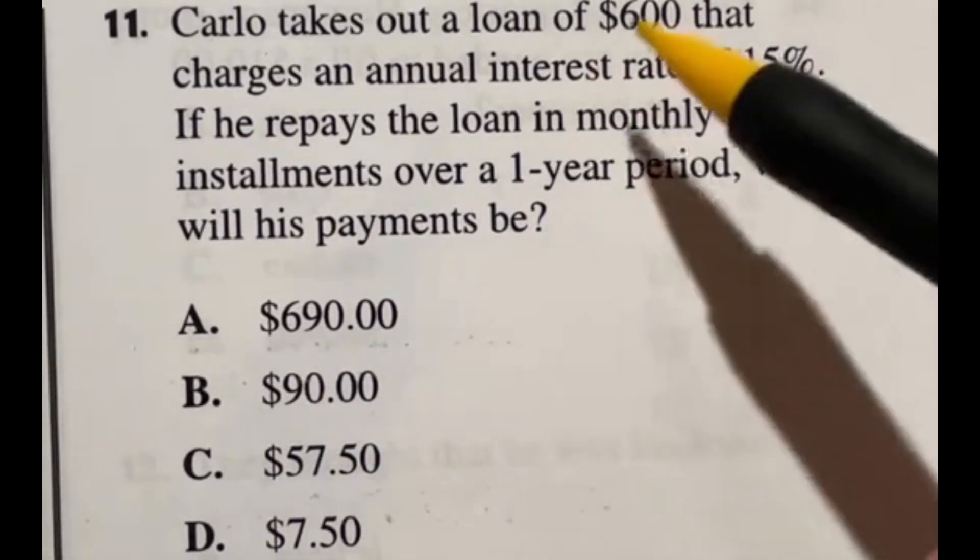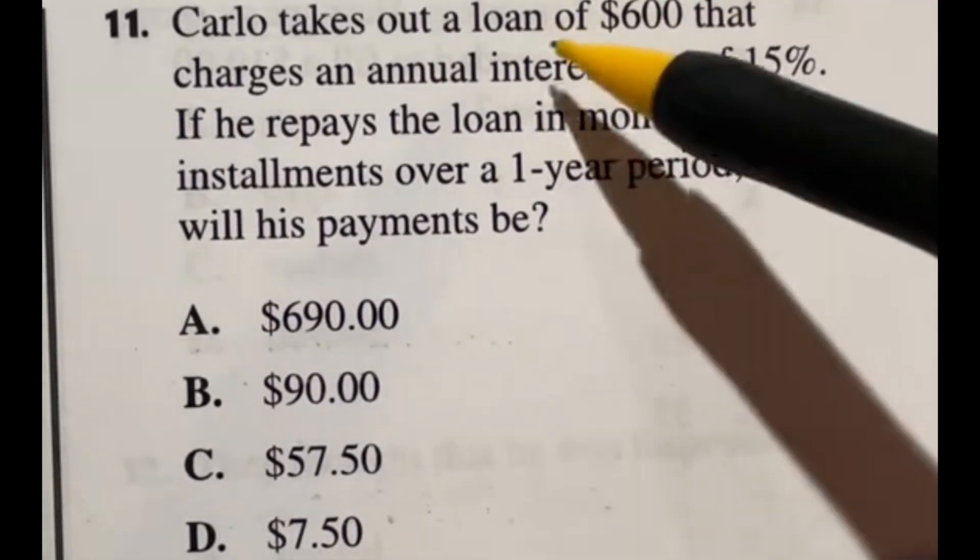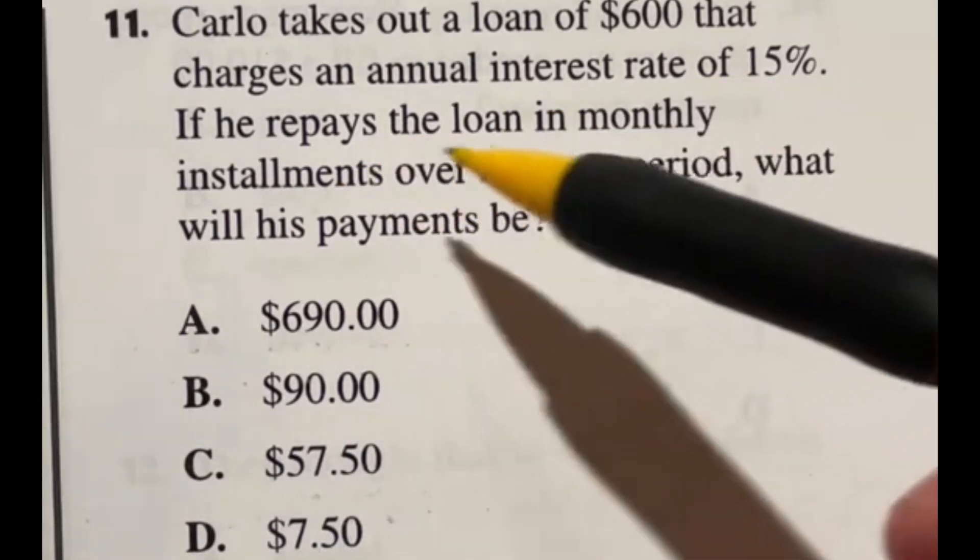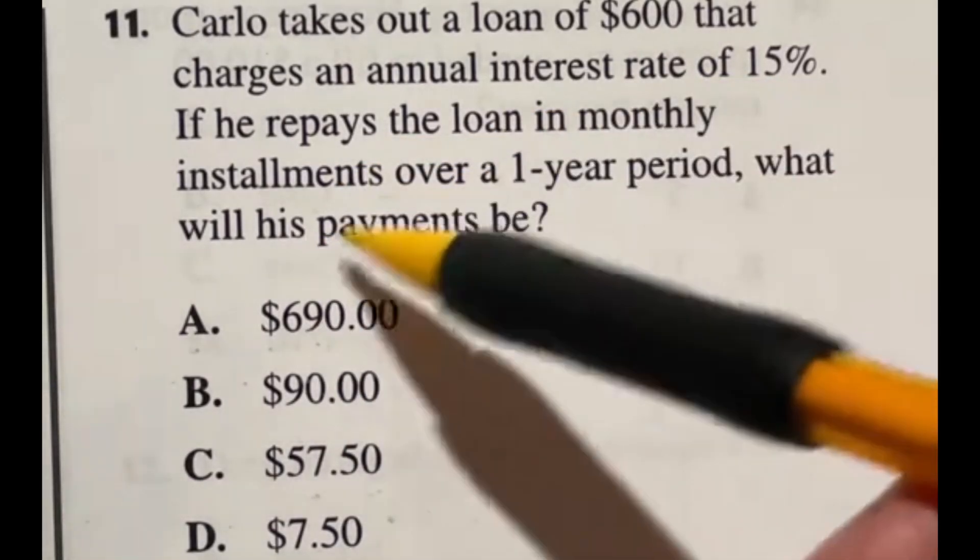For number 11 it says Carlo takes out a loan of $600 that charges an annual interest rate of 15%. If he repays the loan in monthly installments over a one-year period, what will his payments be?